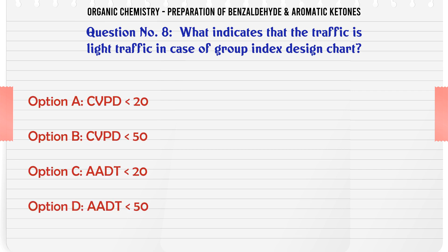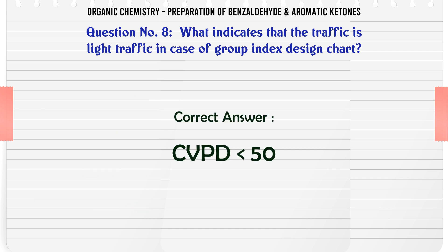What indicates light traffic in the case of the group index design chart? A. CVPD20. B. CVPD50. C. AADT20. D. AADT50. The correct answer is C, AADT50.